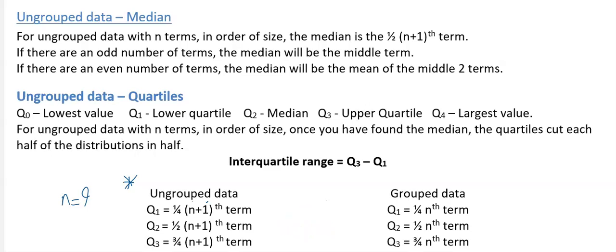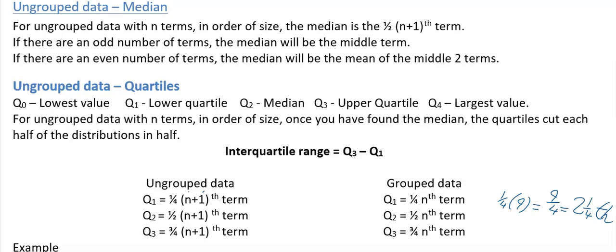For grouped data it's a little different — we'll see two examples on both. For grouped data with nine values, the lower quartile position would be (1/4) × 9 = 9/4 = 2.25, giving the 2.25th value. We'll see how to handle that, though quite often it's good enough just to find halfway between values without needing to do what's called linear interpolation.